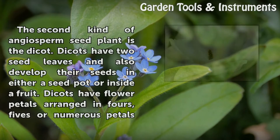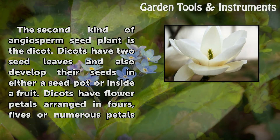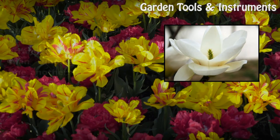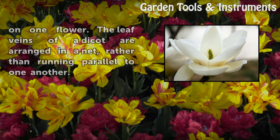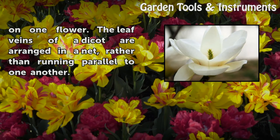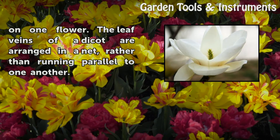The second kind of angiosperm seed plant is the dicot. Dicots have two seed leaves and also develop their seeds in either a seed pod or inside a fruit. Dicots have flower petals arranged in fours, fives, or numerous petals on one flower. The leaf veins of a dicot are arranged in a net, rather than running parallel to one another.